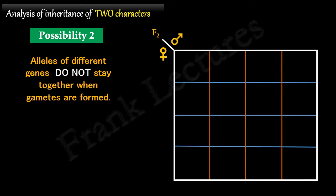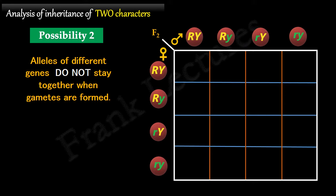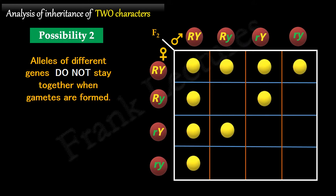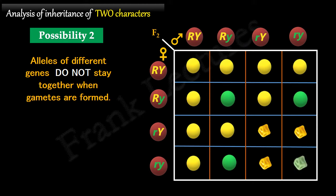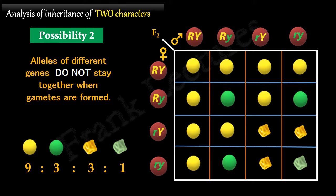Let's now draw the Punnett square with four rows and four columns. Write the gametes produced by the male parent along the top and the female parent along the left side. Writing down the combinations in the F2 generation boxes, we find 9 round yellow seed producing plants, 3 round green seed producing plants, 3 wrinkled yellow seed producing plants, and 1 wrinkled green seed producing plant. Note that two new phenotypes were also obtained: plants with round green seeds and plants with wrinkled yellow seeds.